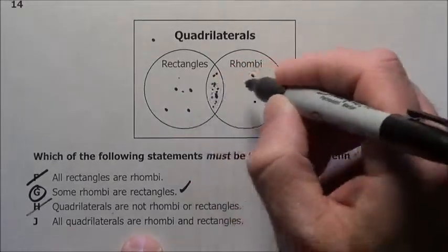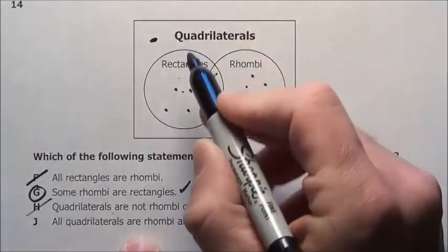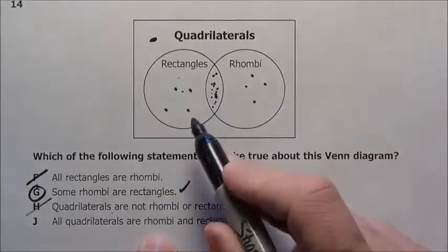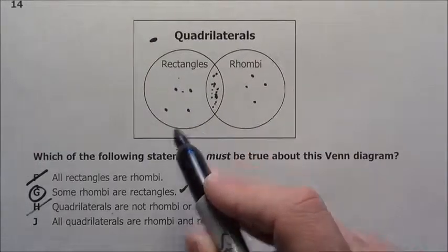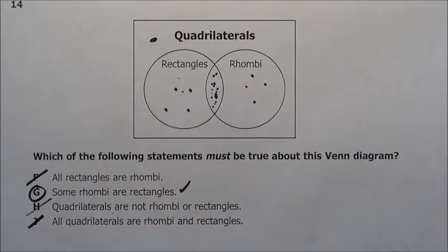All quadrilaterals are within these two circles, are rhombi and rectangles. No, this guy right here, he is a quadrilateral but he is not in the rhombi circle nor the rectangle circle. So J is out. It is obviously choice G for problem 14.